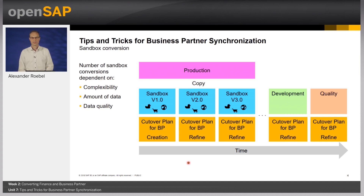Once you feel secure with the respective settings, we can synchronize business partner in the development and quality system. When these systems are converted to S4HANA, you can implement the required customizing for the S4HANA systems here. These settings are recorded in the post-conversion transports that I mentioned in my previous unit.